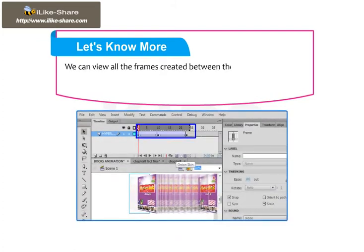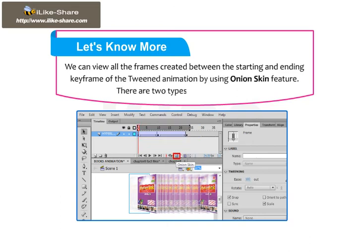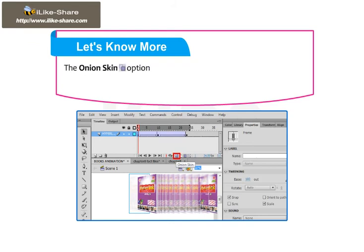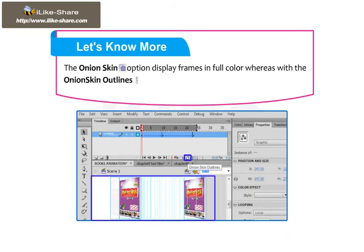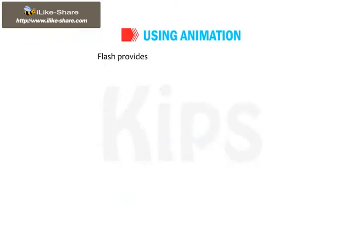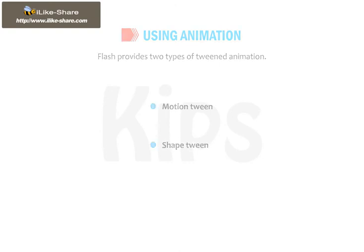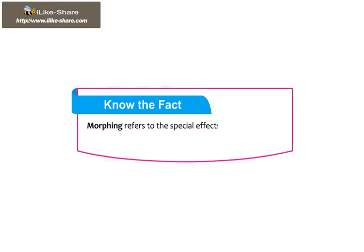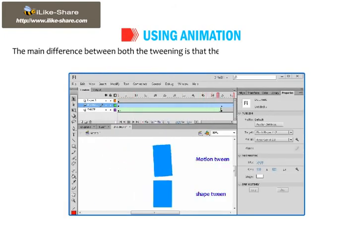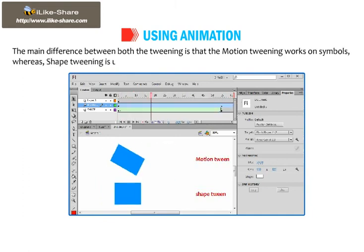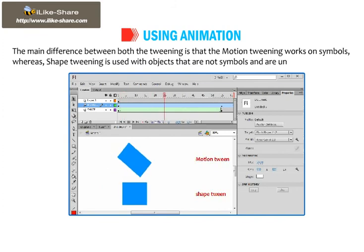We can view all the frames created between the starting and ending keyframe of the tweened animation by using the Onion Skin feature. There are two types of onion skinning: the Onion Skin option displays frames in full color, whereas with the Onion Skin Outlines option you can view the outline of the object in the frames. Flash provides two types of tweened animation: motion tween and shape tween. Morphing refers to special effects in animation that transforms one shape into another through a seamless transition. The main difference between the two is that motion tweening works on symbols, whereas shape tweening is used with objects that are not symbols and are ungrouped.